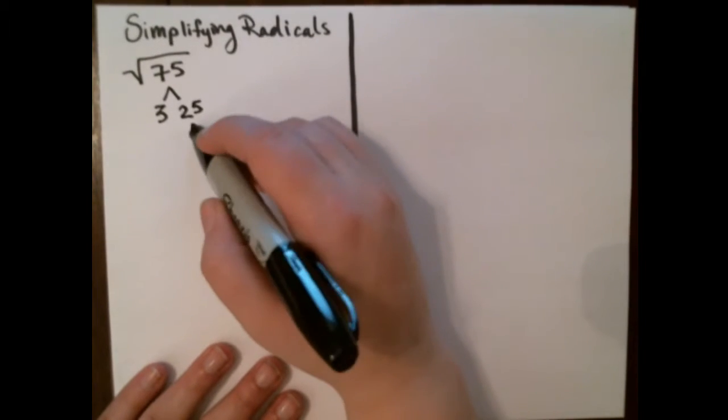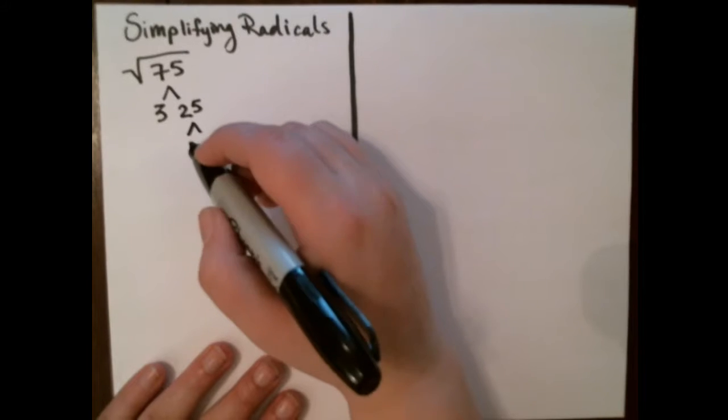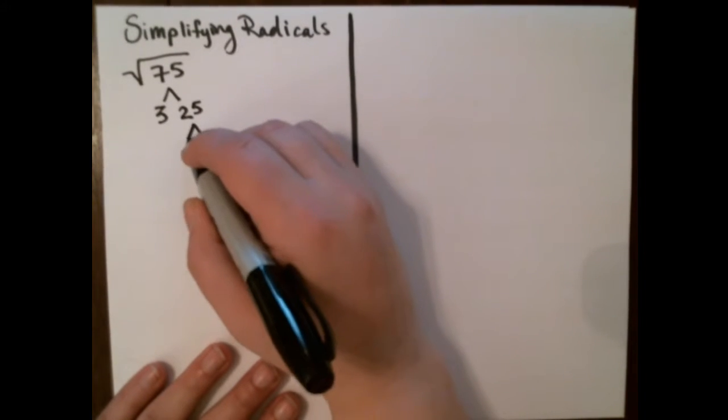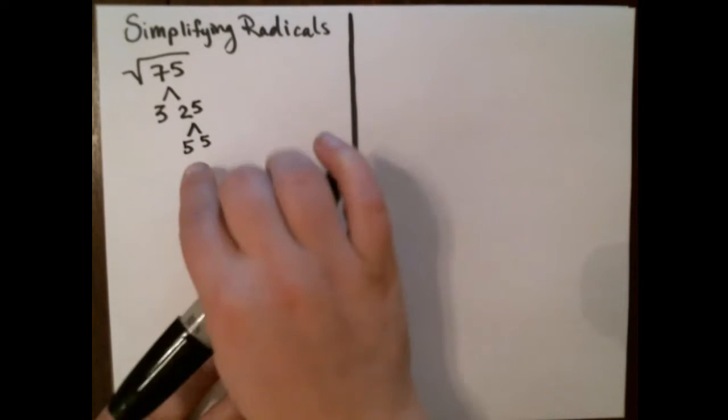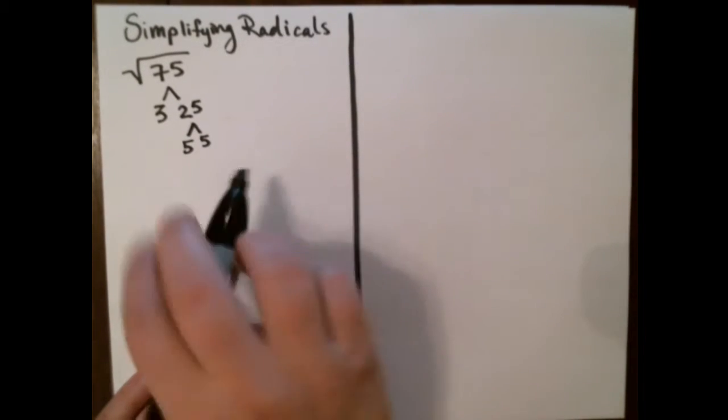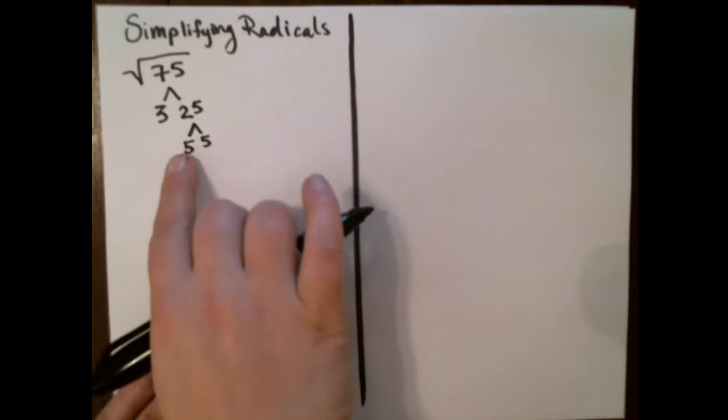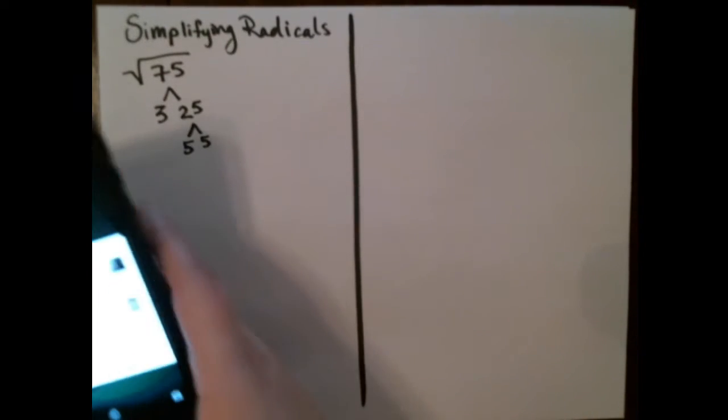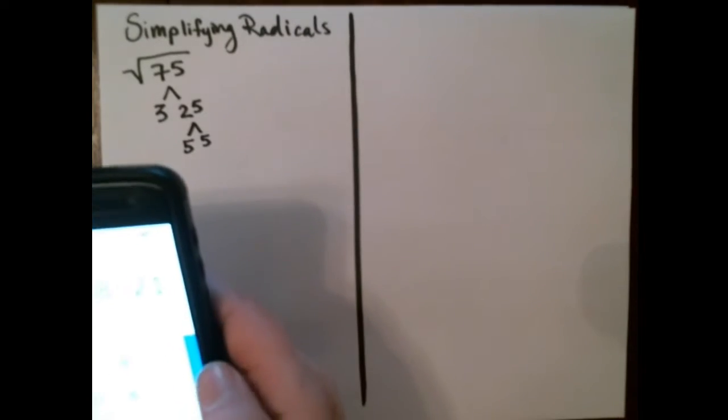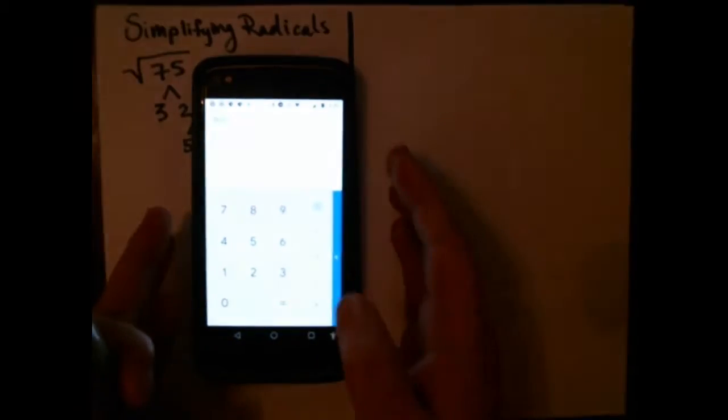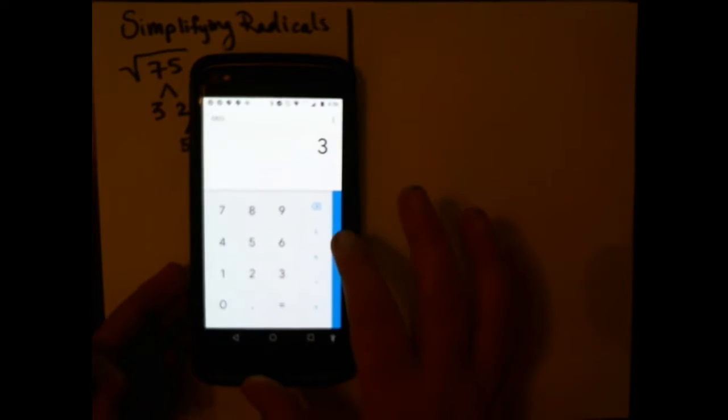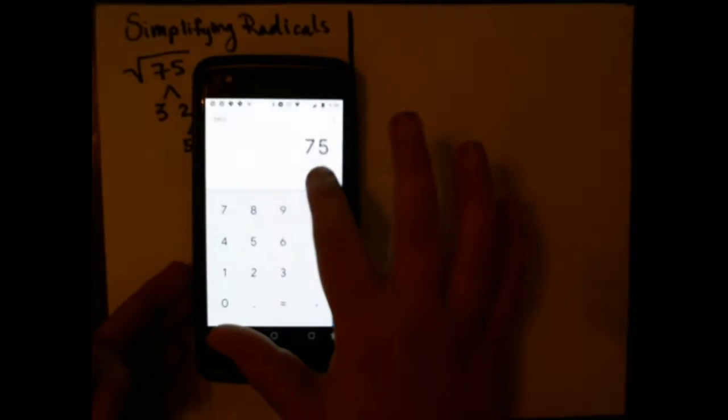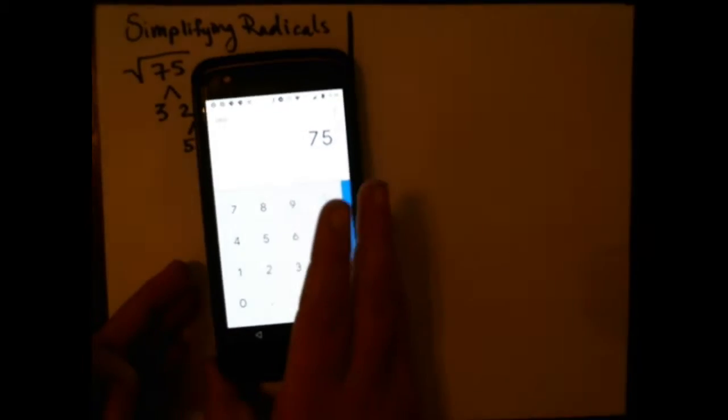Now 25 is awesome. I want to break it down into things that are perfect squares, and a perfect square just means that it has the same side length, so 5 by 5. Now notice all my factors: 3, 5, 5. If I put that in my calculator, 3 times 5 times 5, see how that equals 75? Exactly what we want.